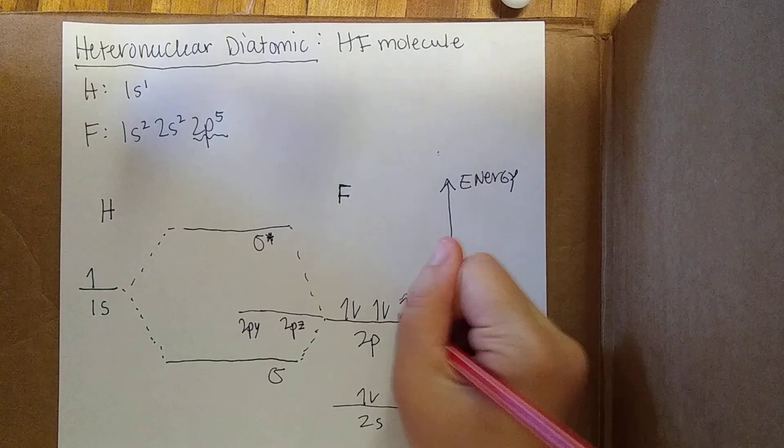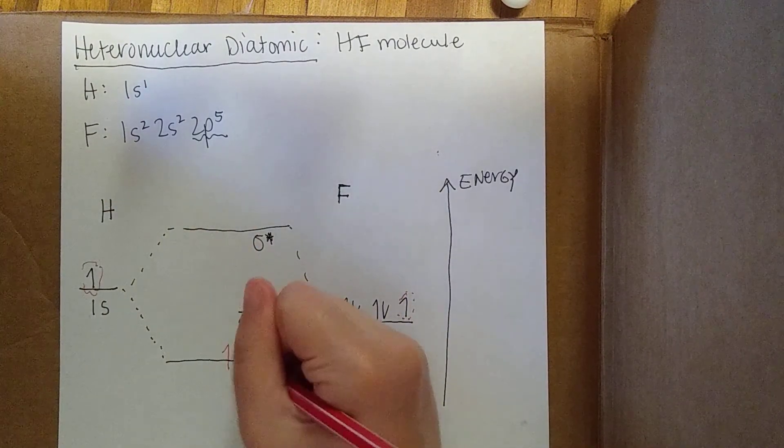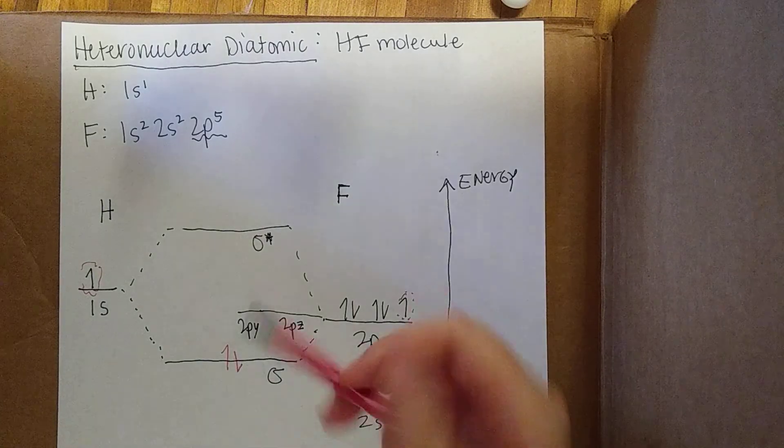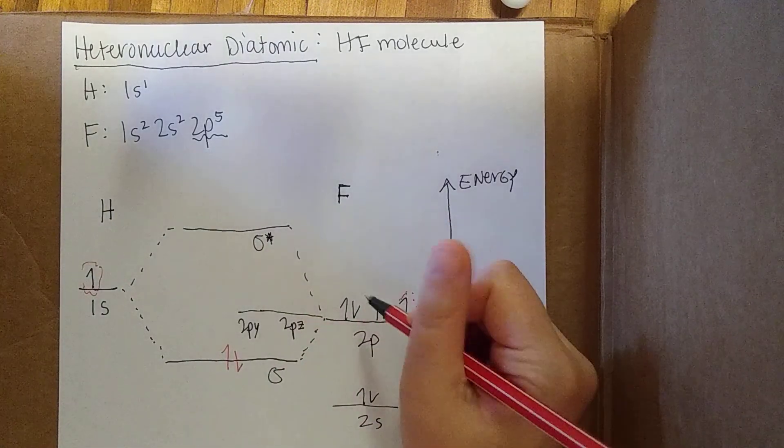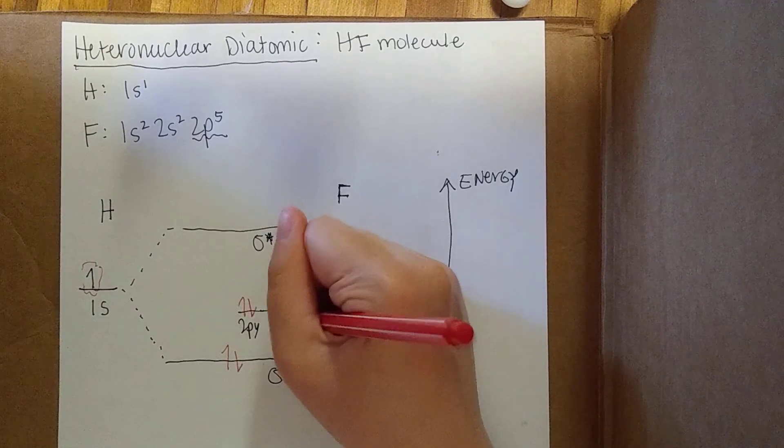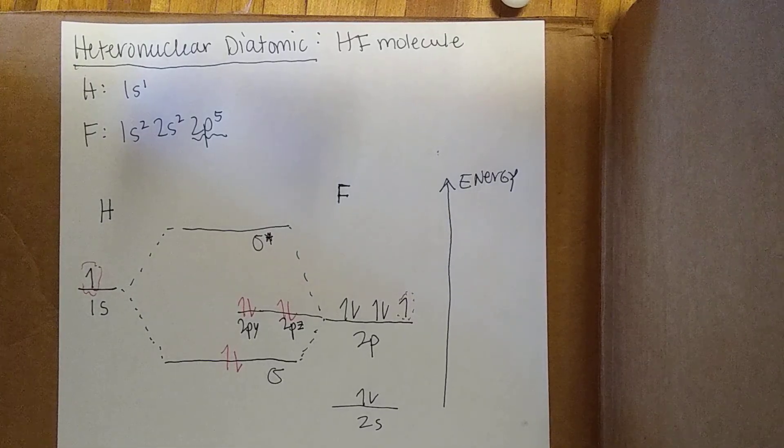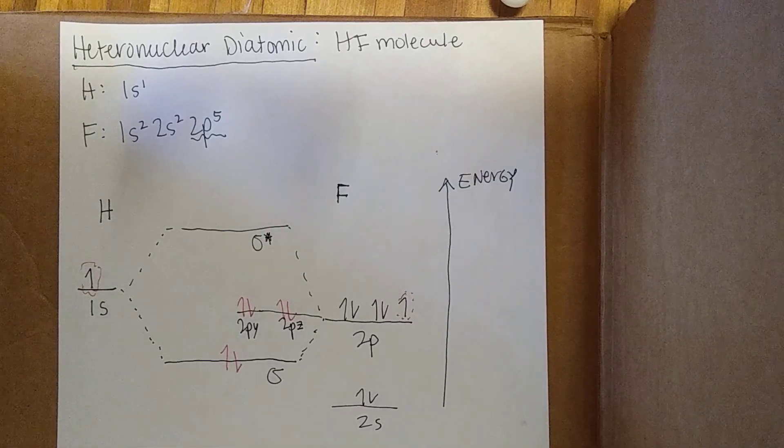Once again, this electron here is going to interact with this electron here. They're going to live in this sigma orbital. So we're filling in lowest energy first. And then these remaining electrons in the 2p will just stay where they are. So that gives us our MO diagram for this molecule.